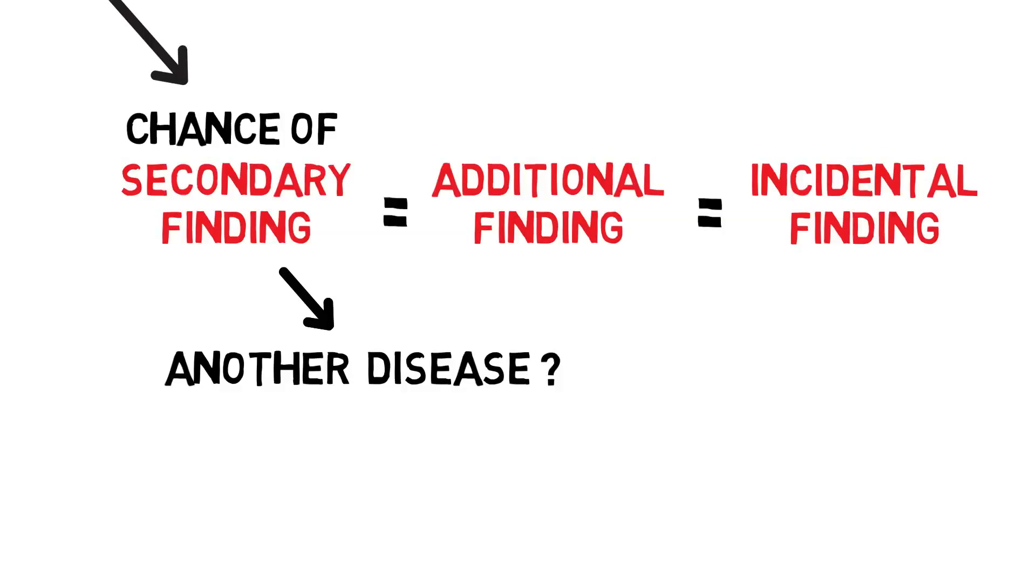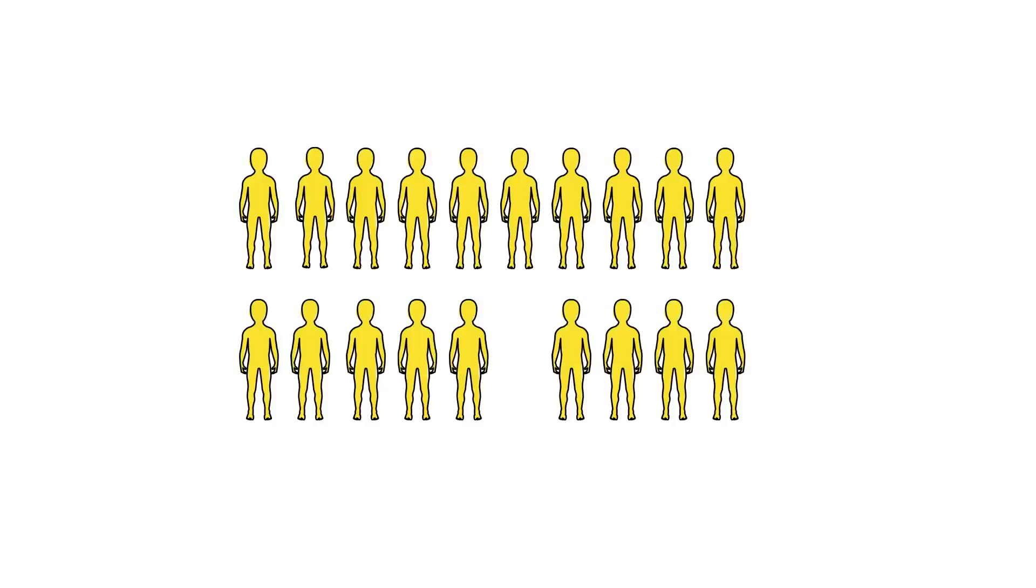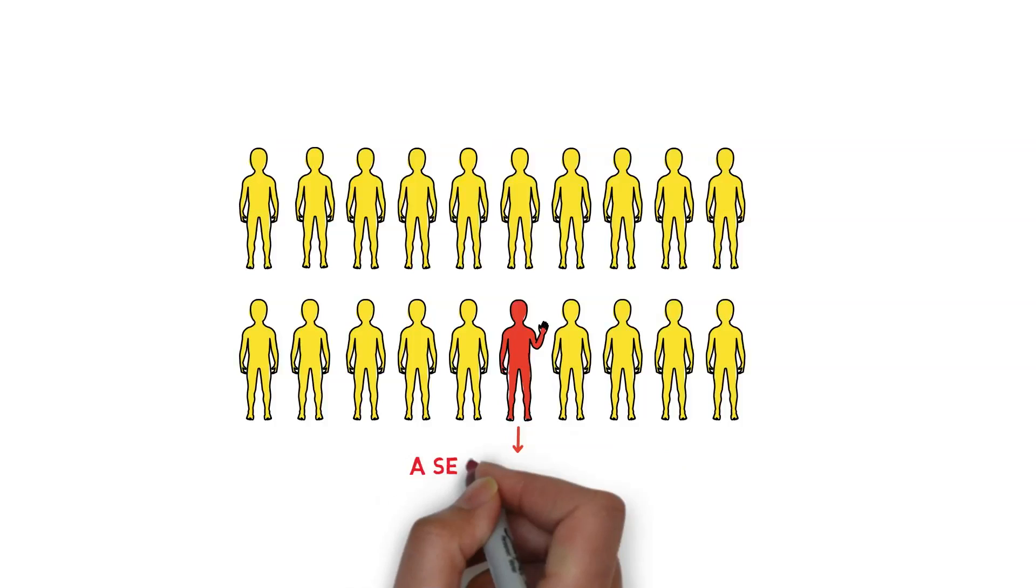Secondary findings are found in about 3-5% of people undergoing exome sequencing. This means that the majority of people having this test do not have a secondary finding. In other words, regardless if exome sequencing provides a genetic reason for Jimmy's health problems, there remains a 1 in 20 chance that an unexpected disease-causing gene change could be uncovered.